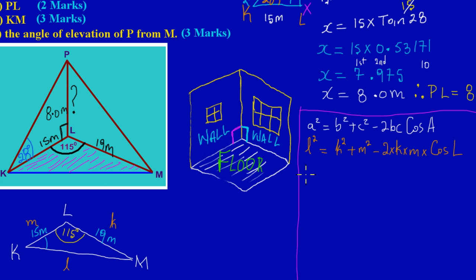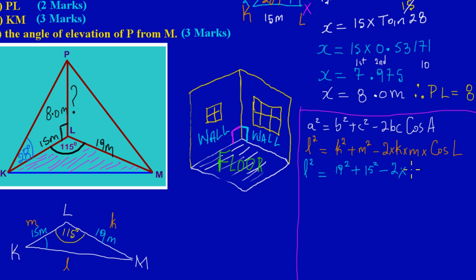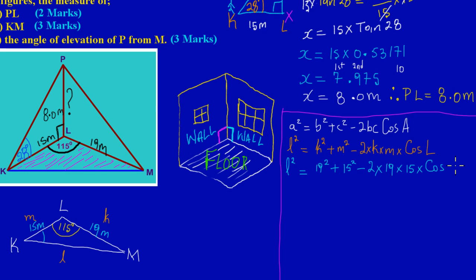By substitution: l² = k² + m² − 2·k·m·cos(115°). The value of k — the side opposite angle K — is 19, and m — the side opposite angle M — is 15. So we have: l² = 19² + 15² − 2 × 19 × 15 × cos(115°).